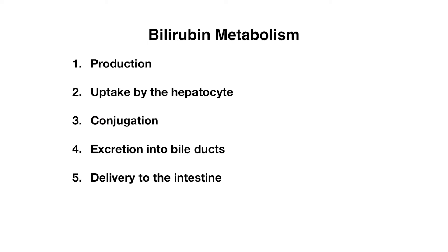Let's start off by talking about bilirubin metabolism, as well as the steps that are involved. First, we start with production of bilirubin, which we'll talk about in more detail, and then uptake of bilirubin by the hepatocyte, leading to conjugation and then excretion into bile ducts, and then eventual delivery to the intestine.